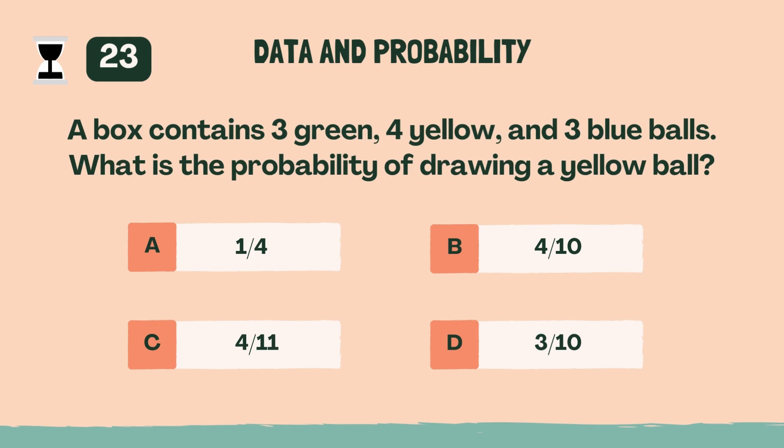A box contains 3 green, 4 yellow, and 3 blue balls. What is the probability of drawing a yellow ball? B, four tenths.